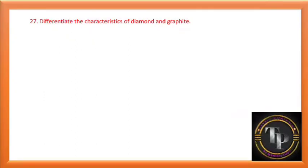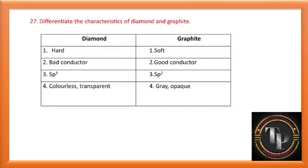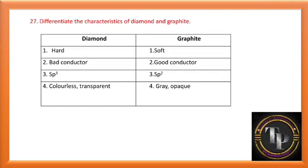Name all crystalline natural forms of carbon: diamond, graphite, and fullerene. Differentiate the characteristics of diamond and graphite: diamond is hard, graphite is soft; diamond is a bad conductor, graphite is a good conductor; in diamond carbon is sp3 hybridized, in graphite carbon is sp2 hybridized; diamond is colorless and transparent, graphite is gray and opaque.